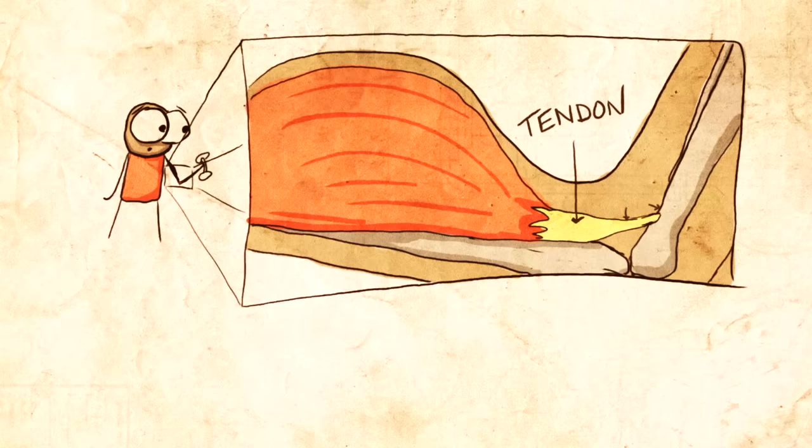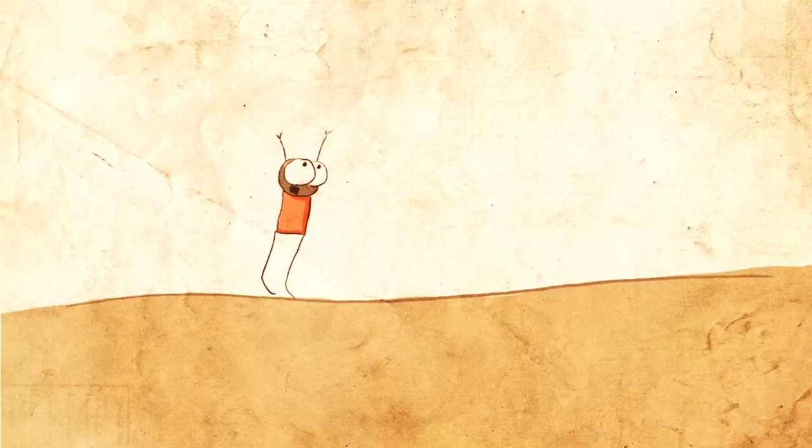But tendons aren't just these strong static tissues. They also have elastic properties. So if you're jumping or running, they work a bit like a spring, storing some of the energy and releasing it on the upward bound.